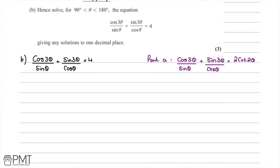In part (b) we solve for θ where θ is between 90° and 180°. The equation is cos(3θ)/sinθ + sin(3θ)/cosθ = 4. From part (a) we know this expression equals 2cot(2θ), so we write 2cot(2θ) = 4, which is the same as 2/tan(2θ) = 4.